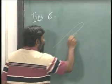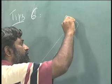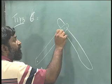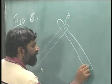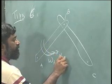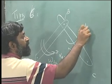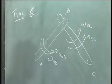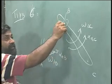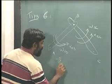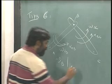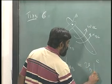Suppose I have one rigid body like this and another rigid body like this. Let's say this is point A, this is B, they are pinned here at B, and this is C. Let's say this body is going through omega AB and acceleration alpha AB. Let's say this one is going through omega BC and alpha BC.